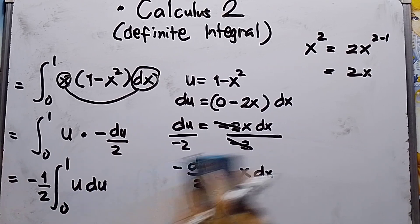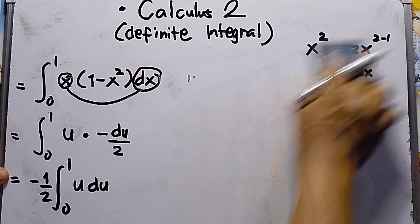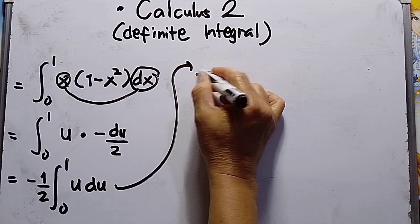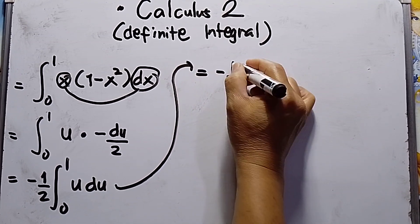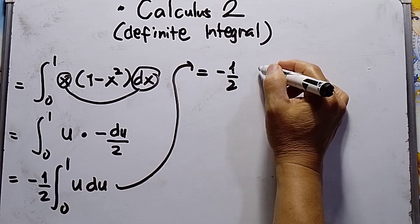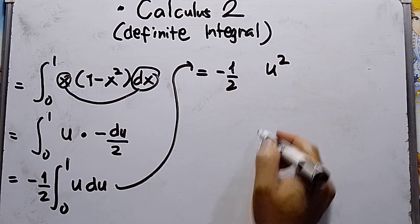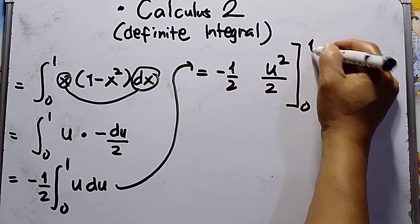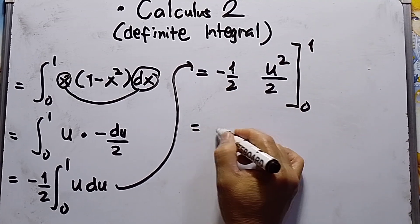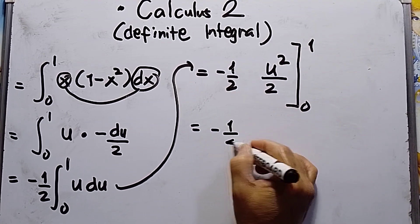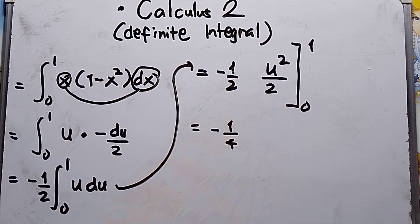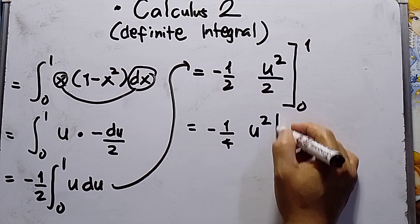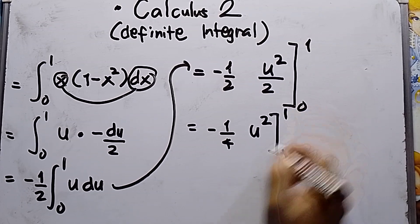Now integrate u du. This will be negative 1 over 2, integral will be u squared over 2, limits from 0 to 1. This will be negative 1 over 4, because I multiply the denominators. So this will be u squared, limits from 0 to 1.